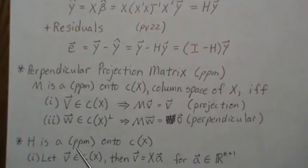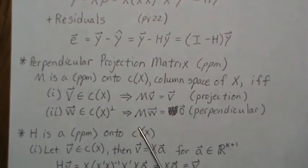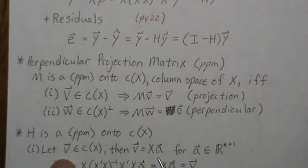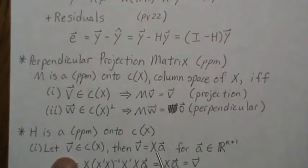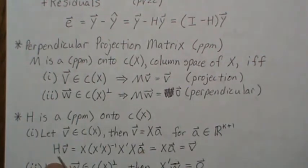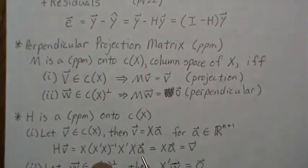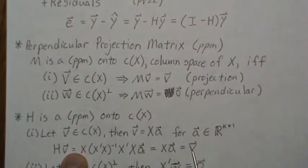Now we're going to prove that h is a perpendicular projection matrix on the column space of x. Let v be in the column space of x, meaning v can be written as a linear combination of the columns of x — so v equals xa for some vector a in k+1 space. Then hv equals h times xa, but the inverse and transpose cancel to give the identity matrix, leaving xa, which was v. So hv equals v, satisfying the first property.